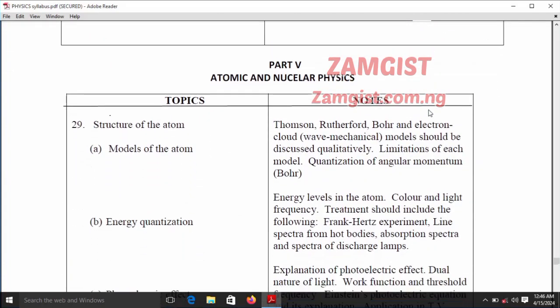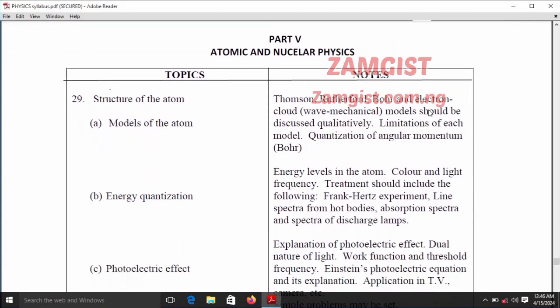We have structure of the atom. This is Part 5, which is atomic and nuclear physics. Under it, we have the structure of the atom, models of the atom, energy quantization, and photoelectric effects. You should be checking the notes side of the table and structure of the nucleus.